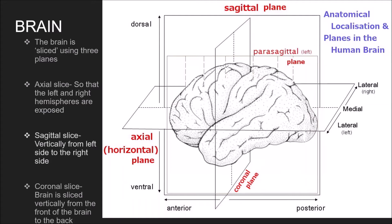The second way to slice the brain is the sagittal slice. The sagittal plane slices the brain vertically from the left side to the right side. The coronal slice is when the brain is sliced vertically from the front of the brain to the back. The other related terms are dorsal, indicating the top of the brain, and ventral, meaning the bottom of the brain. The front of the brain is known as anterior and the back of the brain is known as posterior.